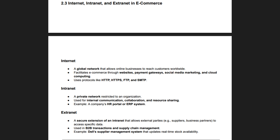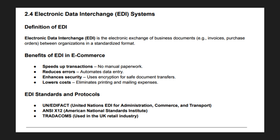Retail companies use the intranet for inventory management, HR processes, and business analytics. An extranet extends intranet access to external partners, allowing secure B2B communication. Supply chain partners use extranets to track orders, manage logistics, and streamline operations. Intranets and extranets improve security by limiting access to authorized persons. By integrating these networks, e-commerce companies can optimize business processes and data security.